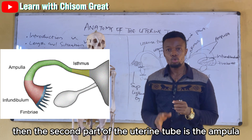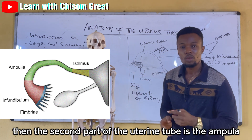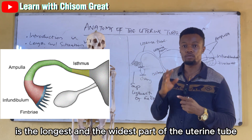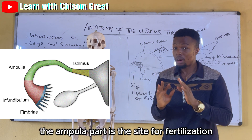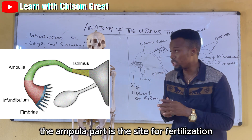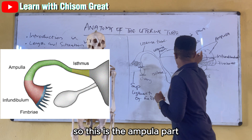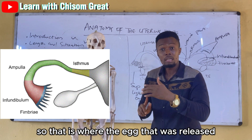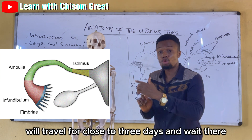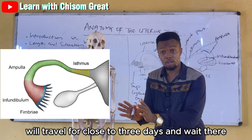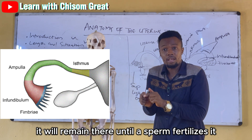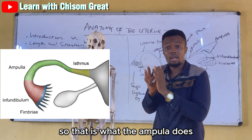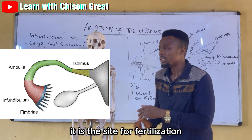The second part of the uterine tube is the ampulla. The ampulla is the longest and the widest part of the uterine tube, and it is the site for fertilization. The egg that was released will travel there for close to three days and wait. It will remain there until a sperm fertilizes it.